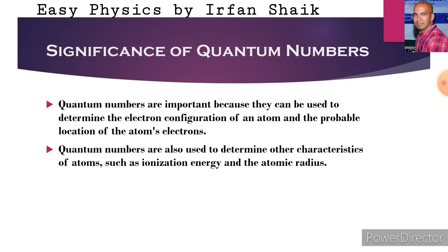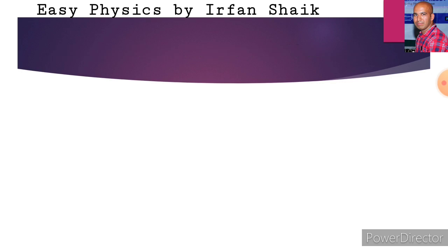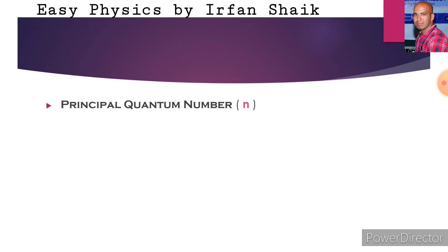We will discuss these qualities of an electron in the next chapter, that is classification of elements. By this, the quantum numbers are very important to understand the location of an electron in its orbit or orbital. So there are some types of quantum numbers. The first one is principal quantum number.